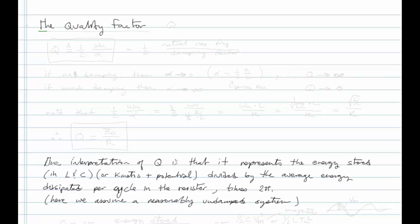We're going to talk about a new quantity called the quality factor. We use the symbol Q for quality factor. It's defined as one half times the ratio of the natural angular frequency to the damping factor — a ratio of natural resonance to damping factor.